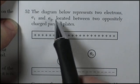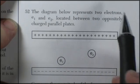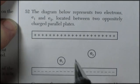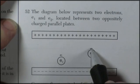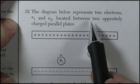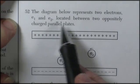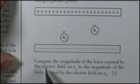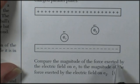Now Question 52. The diagram below represents two electrons, E1, E2, making them negatively charged. And they're located between two oppositely charged parallel plates. Compare the magnitude of the force exerted by the electric field on E1 to the magnitude of the force exerted by the electric field on E2. Well, here's the physics of it.